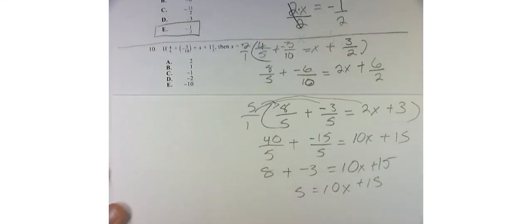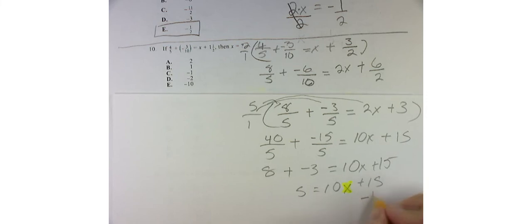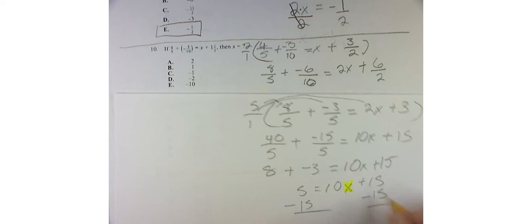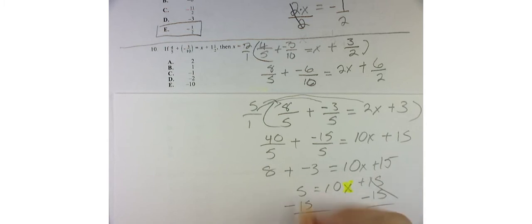Well, now I'm going to undo what's being done to x. Because remember, our goal is to get x by itself. So I'm going to subtract 15 from both sides because originally I'm adding 15 to 10x. 15 minus 15 is 0. But over here, I've got negative 10 is equal to 10 times x.